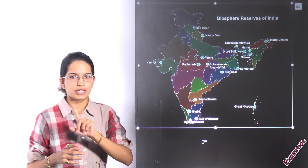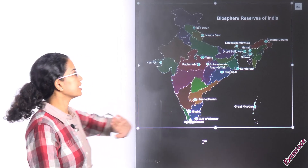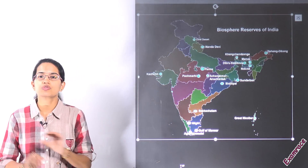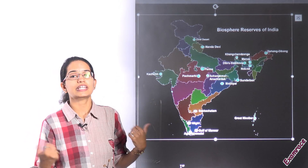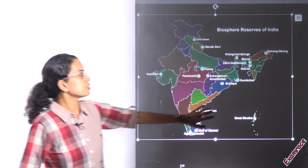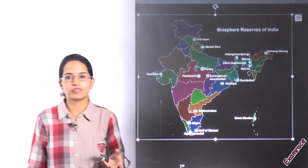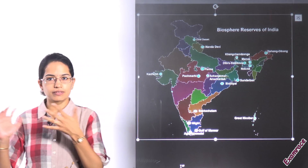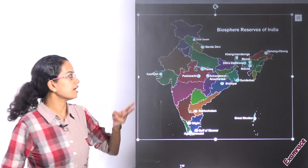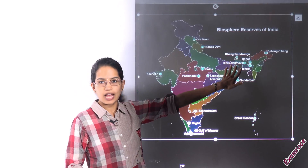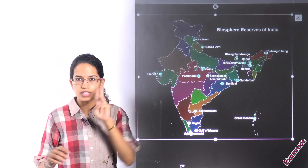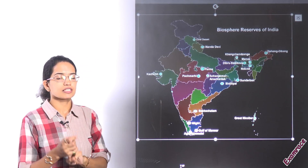The Nilgiris was the first biosphere reserve, followed by Nanda Devi. Interestingly, certain states do not have any biosphere reserve — for example, Rajasthan. In the Northeast, there are a lot of biosphere reserves. Nokrek is found in Meghalaya, Dibang-Dihang is in Arunachal Pradesh, and in Assam there are two important ones: Manas and Dibru. In Sikkim, you have Khangchendzonga.